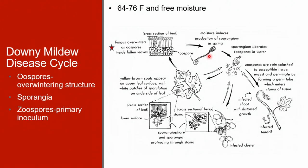Sporangia are dispersed by wind and splashing rain. The sporangia produce and release zoospores, which serve as the primary inoculum. Zoospores are released when there is free moisture on the tissues. Zoospores then swim towards the stomata and form a germ tube that enters the leaf tissue through a stoma.